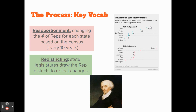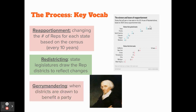Redistricting is when state legislatures draw the new districts to reflect the reapportionment changes. The old map didn't work for Pennsylvania because it had 18 districts — it just lost a rep because of the 2020 census — so we need to redraw the map to reflect 17 districts. Whatever political party controls the state legislature draws the districts, and if they draw them to benefit their own party, that's called gerrymandering.